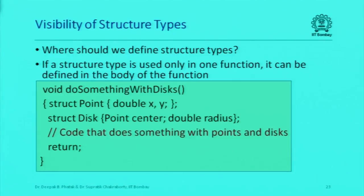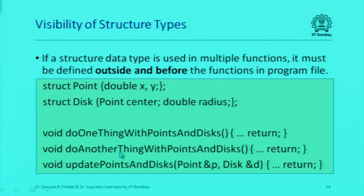The other thing to remember is where we should define structure types — basically, in which parts of the program should the definition be visible. If you are using a particular structure only within the body of a function, you can define it there. But if there are three different functions using point and disk, you have to define these outside and before those functions, so that when the compiler goes through your program it first sees the structure definitions, then the functions which use them.